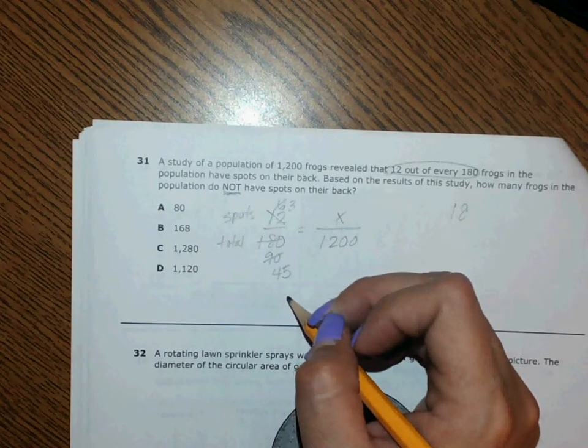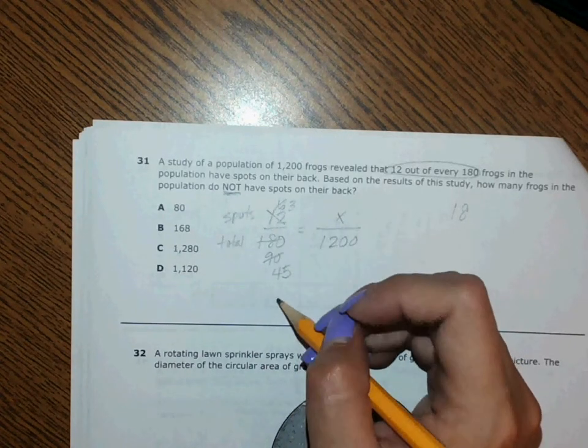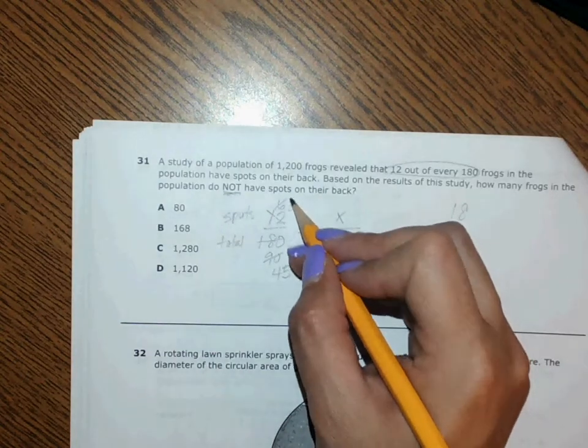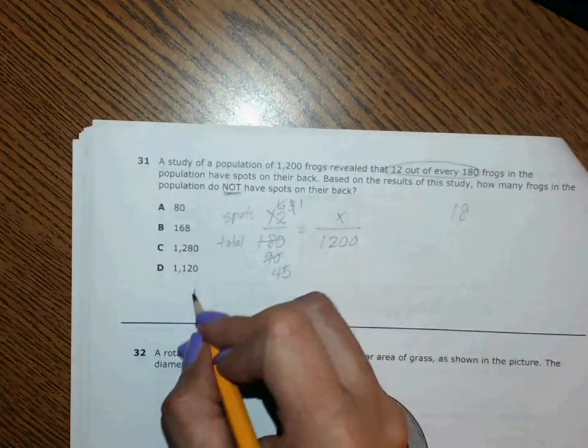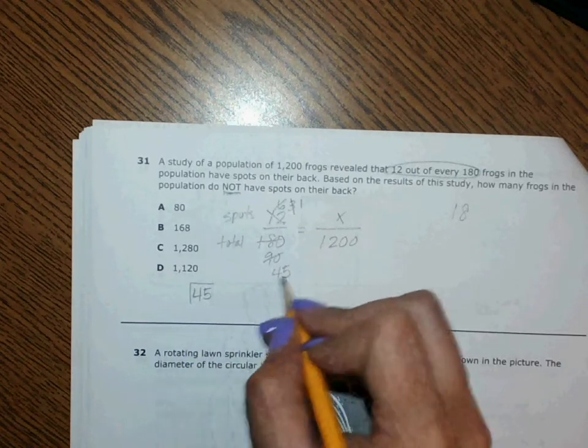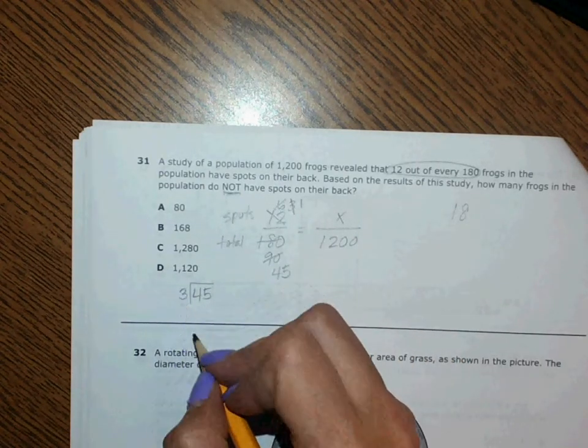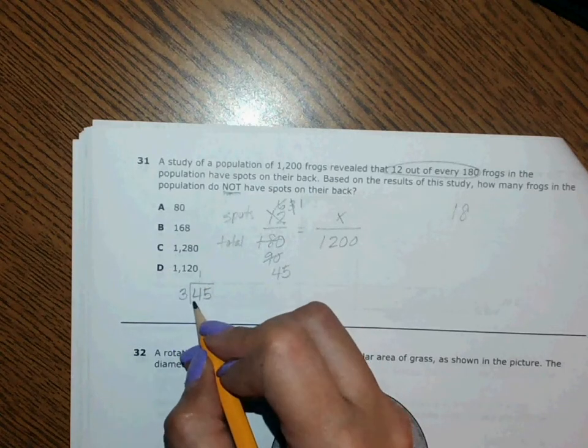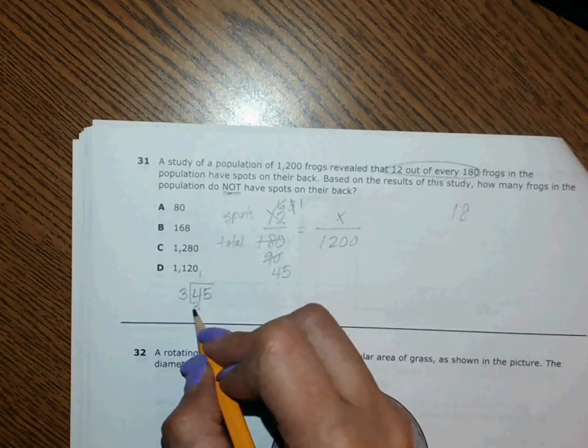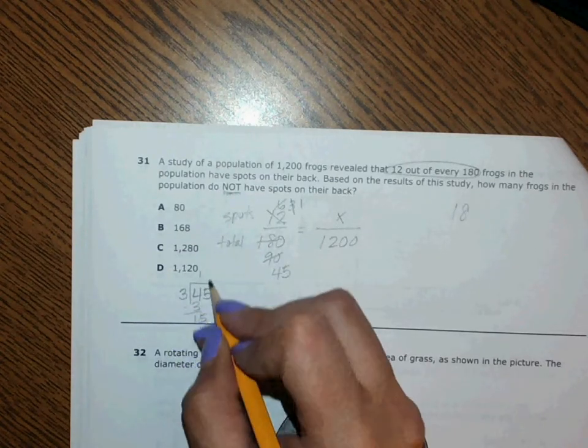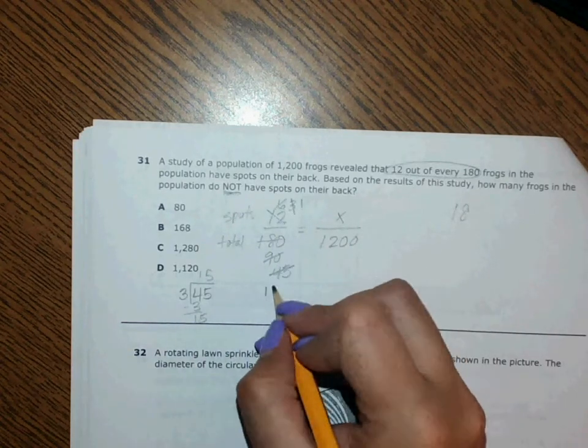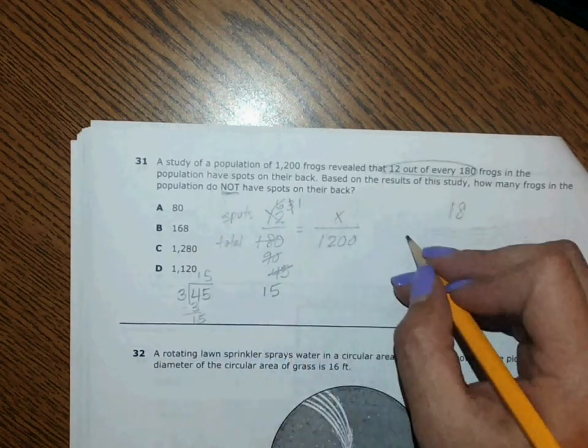Yes, because three goes into 45. Three goes into three one time. The way I knew is I added four and five together, it made nine, and I know that nine is divisible by three. So three goes into four one time, that's three, subtract. And three into fifteen is five times. So I'm going to rewrite this: I have one over 15.